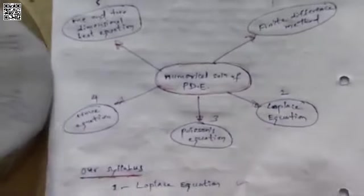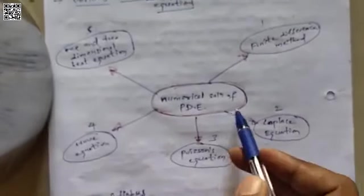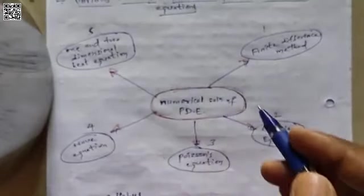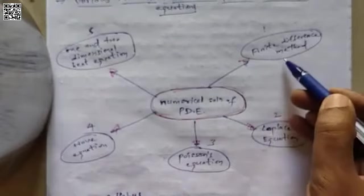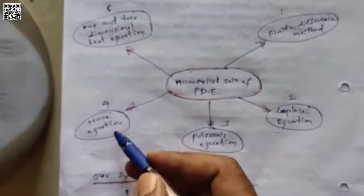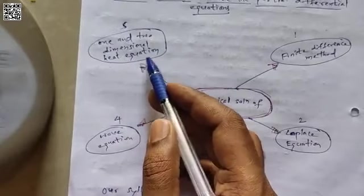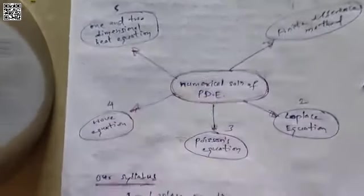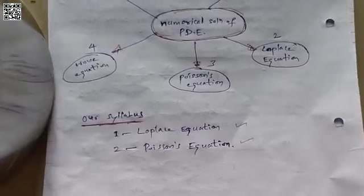Now, what are the different methods of solving these problems? The numerical solution of partial differential equations can be approached by many different ways. I have mentioned five methods: the finite difference method, the Laplace equation, the Poisson's equation, the wave equation, and the one and two dimensional heat equations. As far as our syllabus is concerned, we have the Laplace equation and Poisson's equation, so we will move to the Laplace equation now.